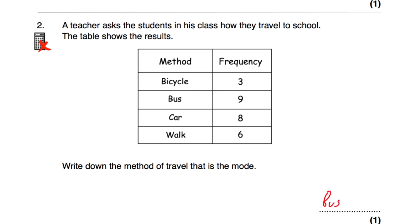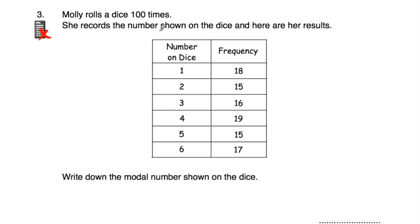Question number three. Molly rolls a dice 100 times and records the numbers shown. She got 18 ones, 15 twos, 16 threes, 19 fours, 15 fives and 17 sixes. The question says, write down the modal score shown on the dice — the most common number, the one with the highest frequency. The one with the highest frequency is four, so the modal score was four.